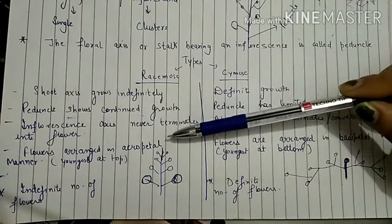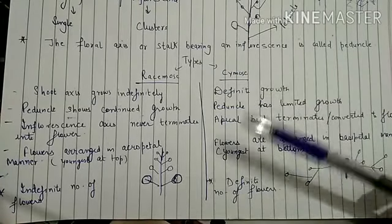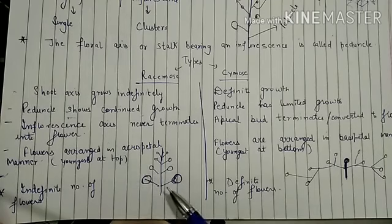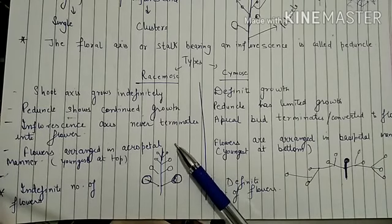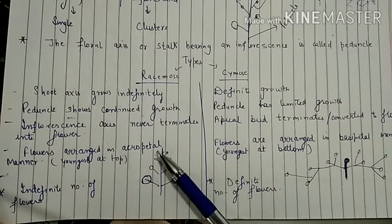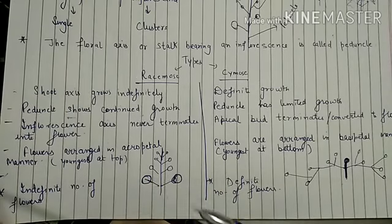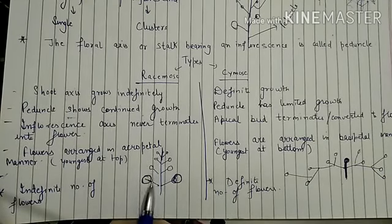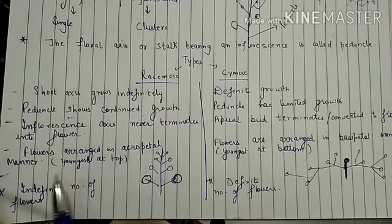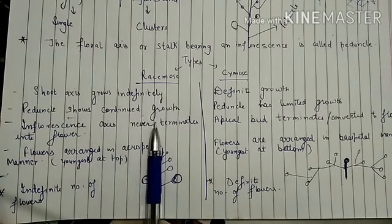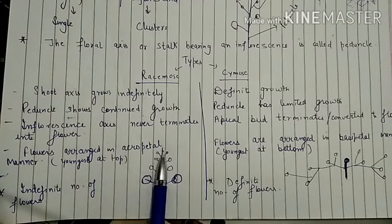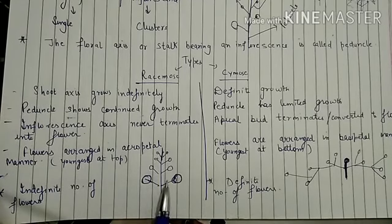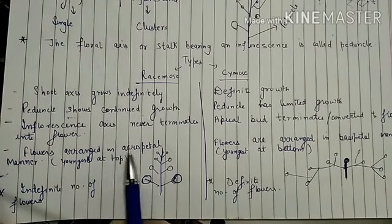Racemose inflorescence shows indefinite growth — the peduncle, that is the main axis, grows continuously. Since there is no termination of the main axis into a flower, there is an indefinite number of flowers. The oldest flower is at the base of the peduncle and the youngest is at the top, which is acropetal manner.